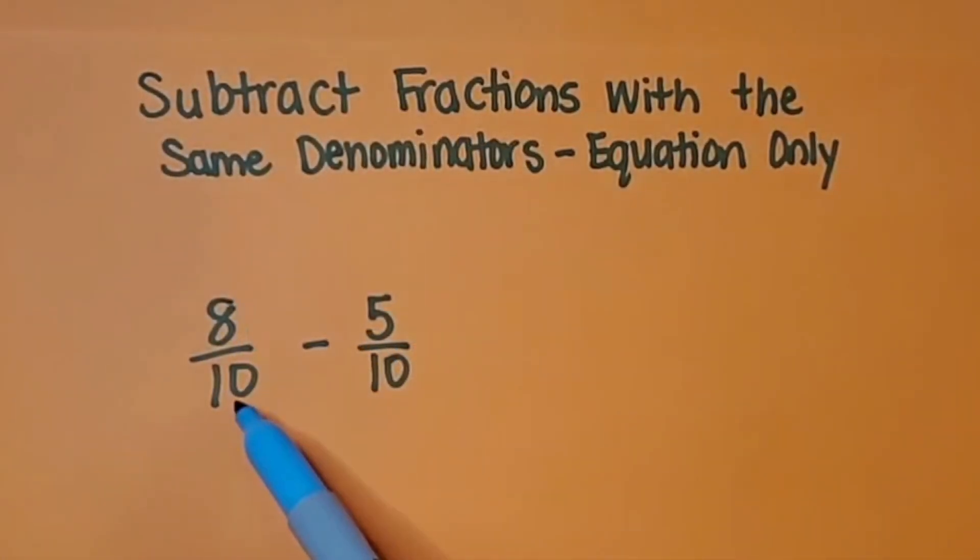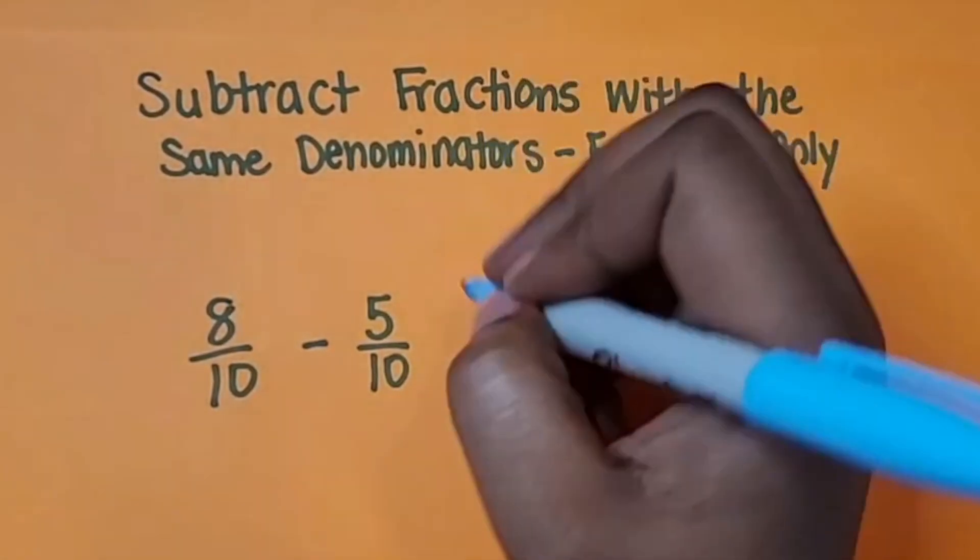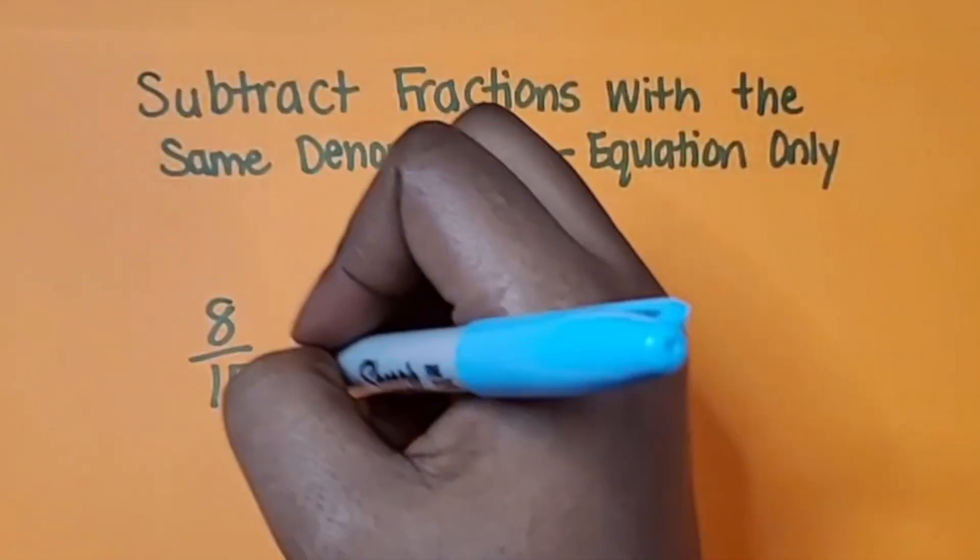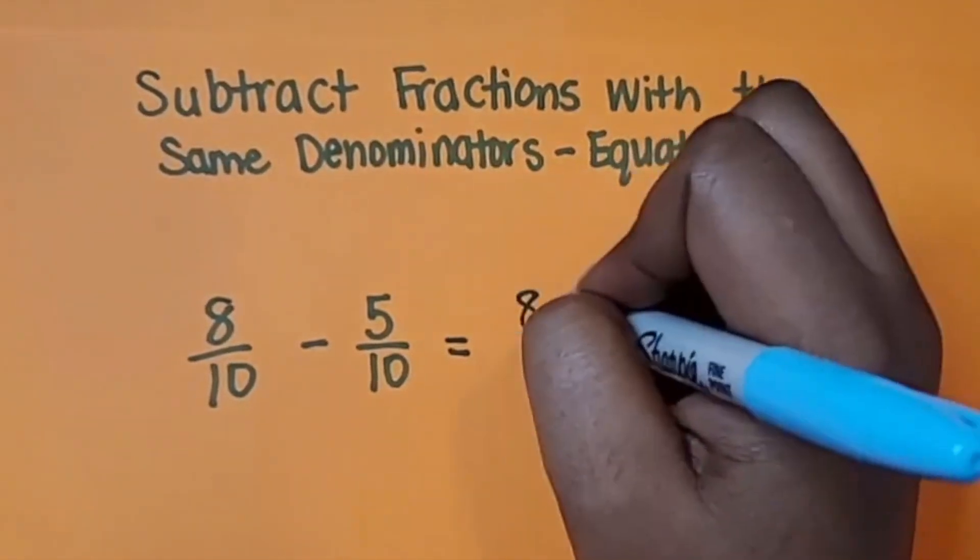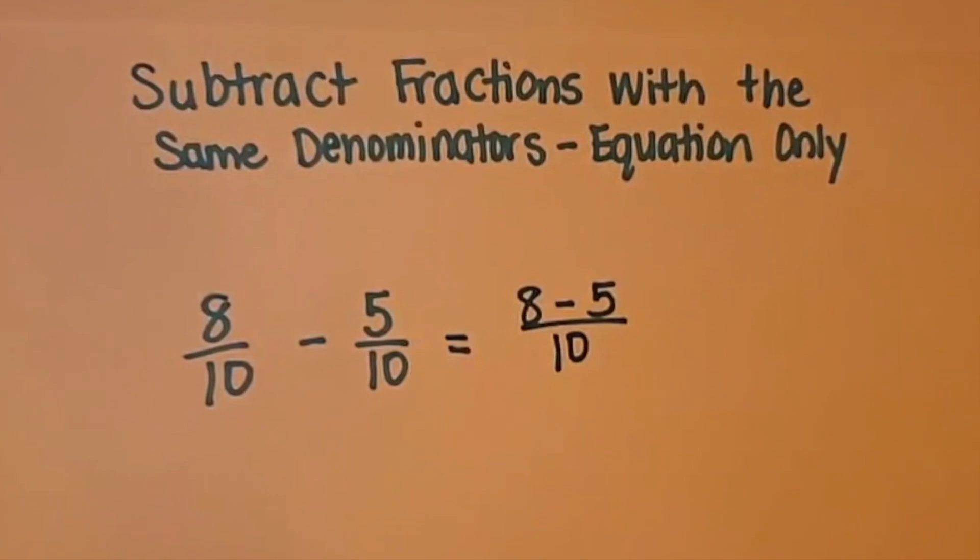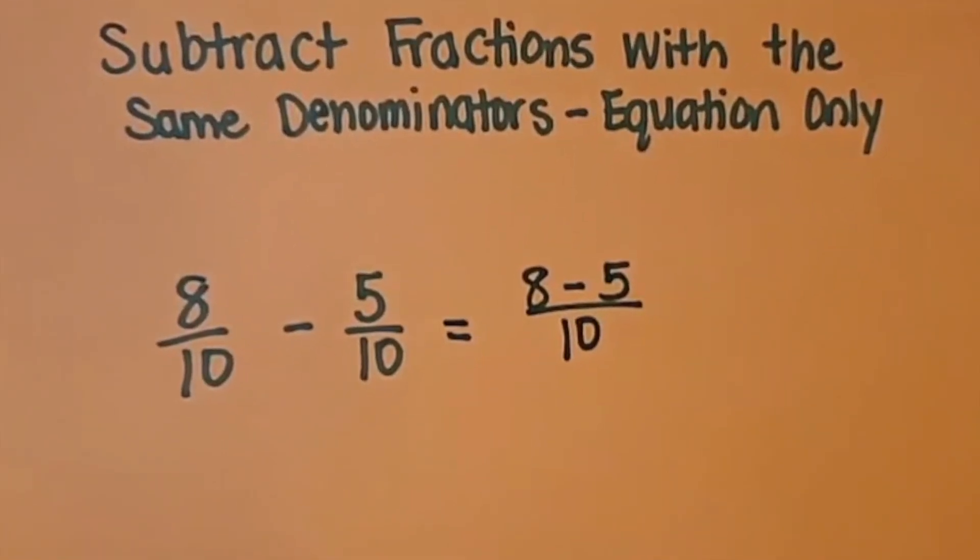So we have 8 tenths here, and we're going to subtract 5 tenths from the 8 tenths. When you're adding or subtracting fractions, your denominators have to be the same in order to subtract, and we are not going to change our denominators. So if we look at these two fractions, we're subtracting the 8 tenths minus the 5 tenths. Both of their denominators are 10, so that will stay the same.